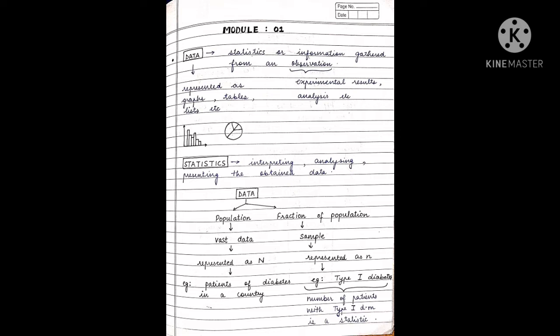Data can be divided into two sections: population and fraction of population. Population is the wider level data, the total data. For example, if we consider how many patients have diabetes in a country, that is population data, let's say 100 patients. Next, taking a sample from that, there are three types of diabetes: type 1, type 2, and gestational. If we take type 1 diabetes as a fraction, that type 1 diabetes data is sample data. When we interpret that type 1 diabetes information and find the number of patients is 20, that representative value is our statistic.